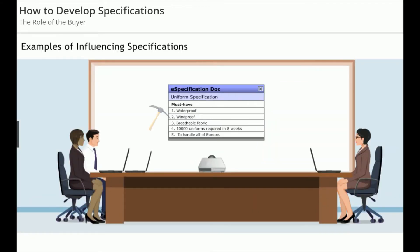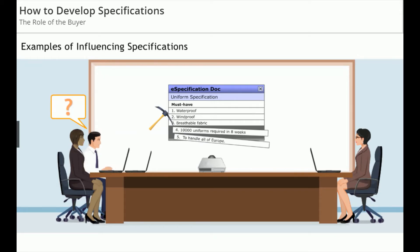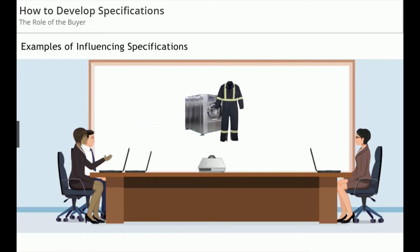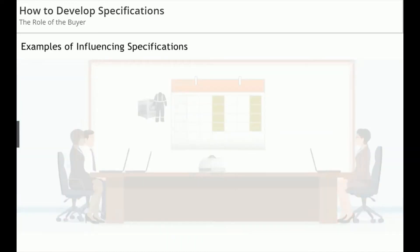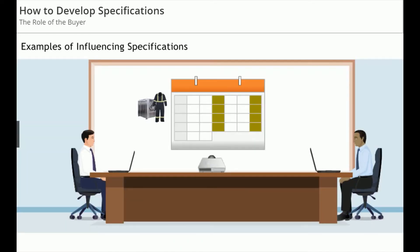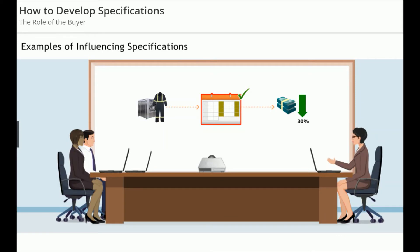I see that I need to influence the specifications. Can you give me some examples of how I would do that? Let's say we are buying the service for cleaning our uniforms. Instead of cleaning the uniforms three times per week, two might be enough. If the budget holder agrees, you've just reduced the cost of the service by over 30%.